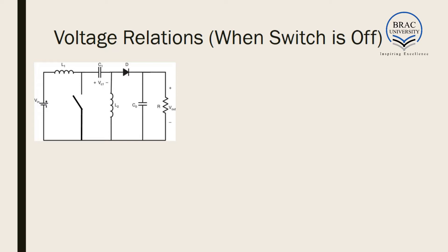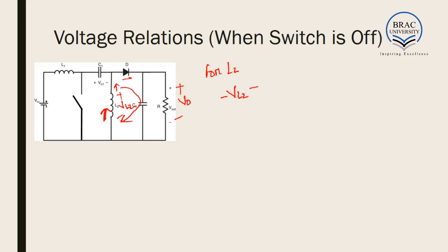When the switch is off, the inductor L2 which was charged will get discharged. The direction of the diode also dictates that the current flows in this direction. Applying KVL, we get minus VL2 plus VOUT equals 0, so VL2 equals VOUT. We put this as equation number 4.